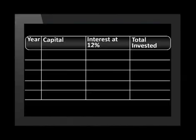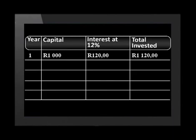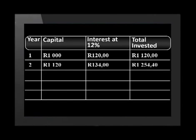Just one thing before we start: don't round off any numbers until the end, even if it looks really long and messy. Let's draw up a table. Next to year, you write 1 — that is the first year. Next to capital, you write R1,000. Next to interest at 12%, you write R120. Next to total invested, you write R1,120. Now we move on to year two. Next to capital, you write R1,120. Next to interest at 12%, you write R134.40. Next to total invested, you write R1,254.40.